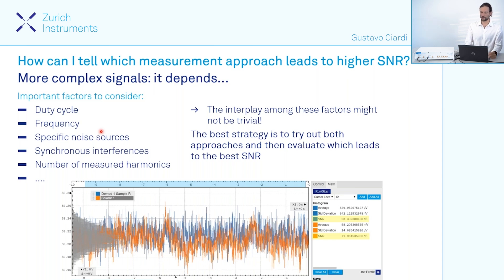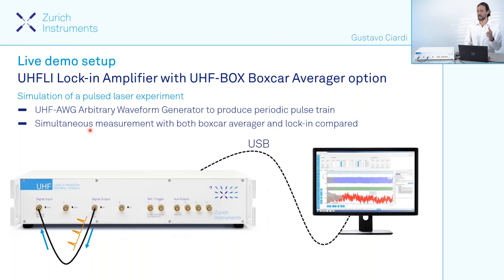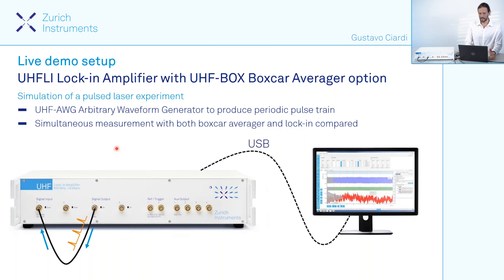Therefore, the best strategy for complex signals is to try out both approaches and then evaluate which leads to the best SNR. Now you might ask: do I need two instruments to decide which one to use? It turns out that with our lock-in amplifiers you can have both instruments in the same device, so you don't need to choose — you can compare your signals and then decide which is the best measurement approach for your experiment.